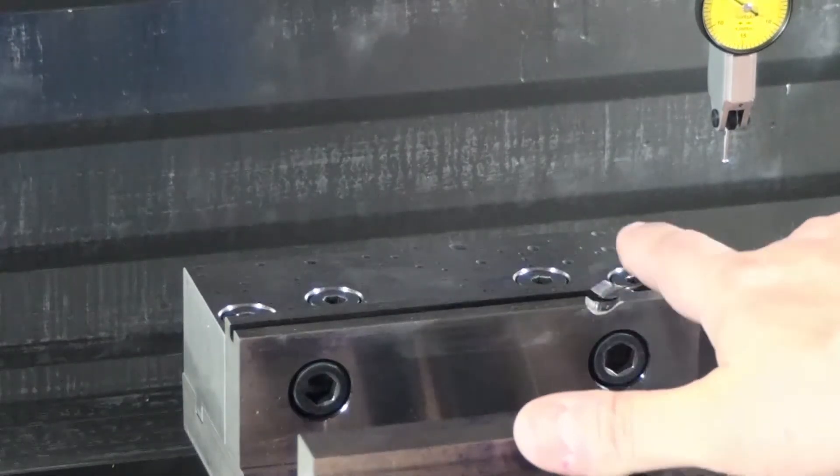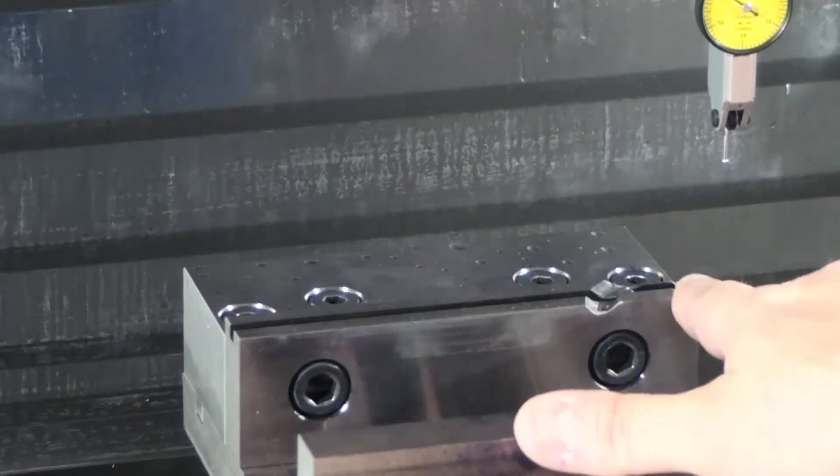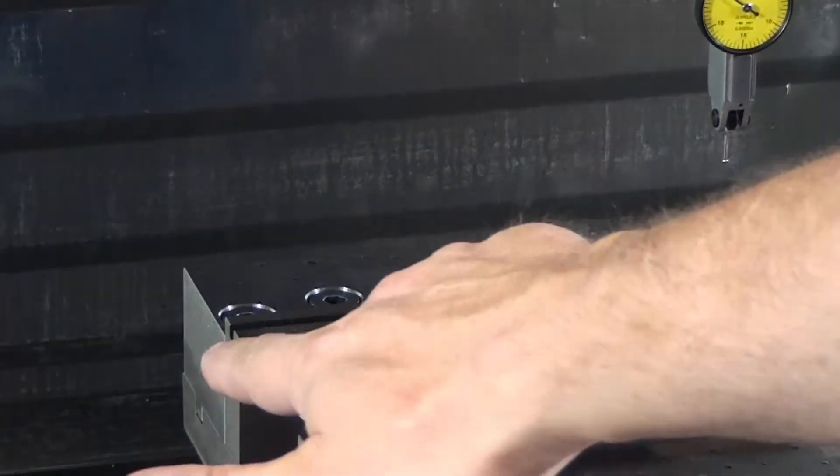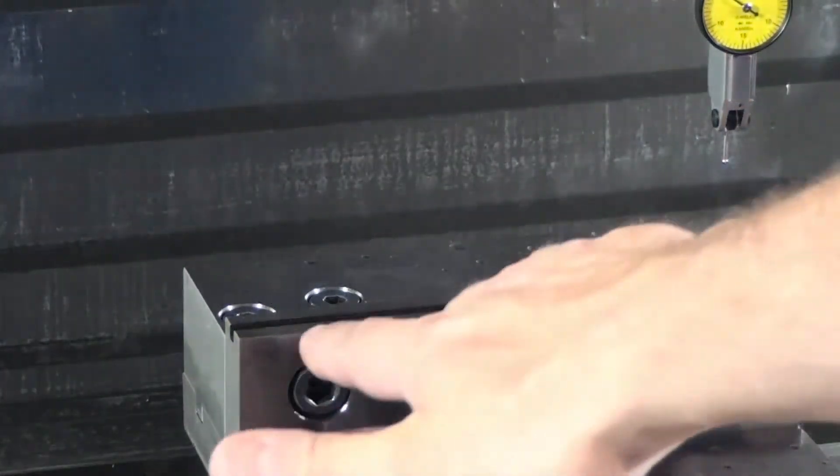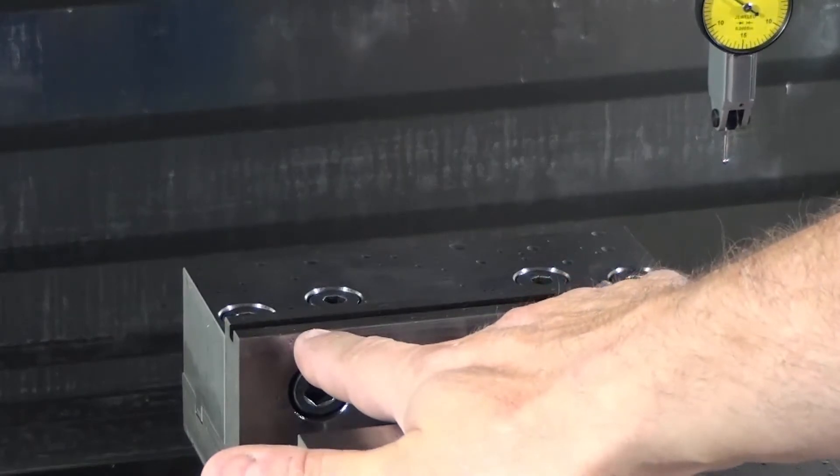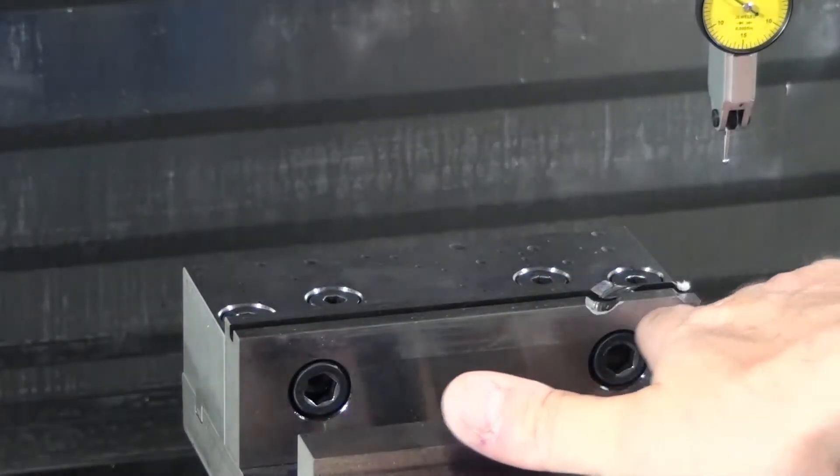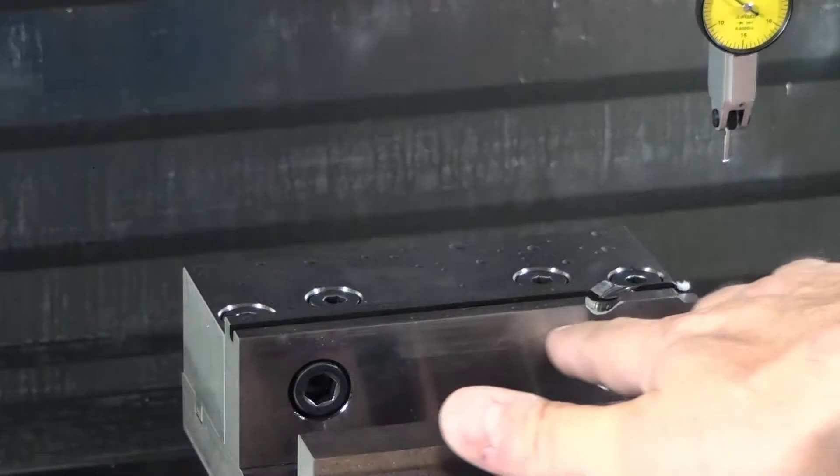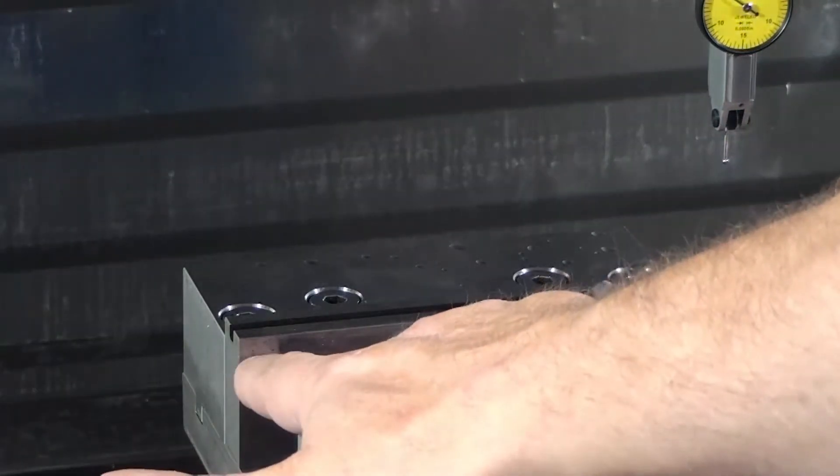Some vises will not have this machining and therefore you can use the top edge of the vise jaw in order to indicate your part. But make sure that you indicate along the entire length of the vise jaw.